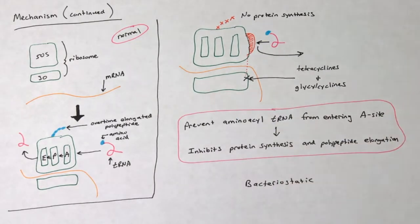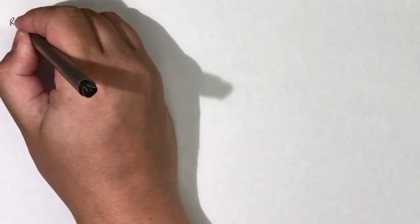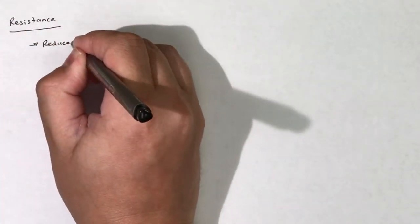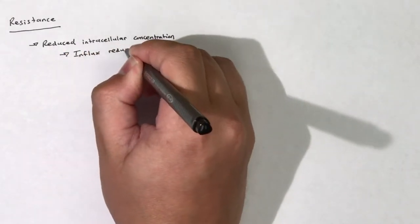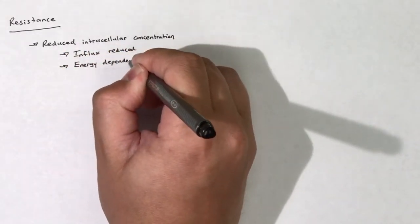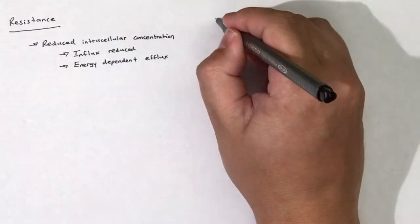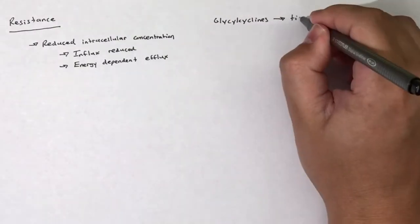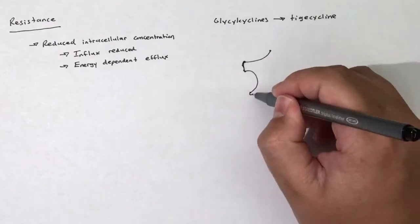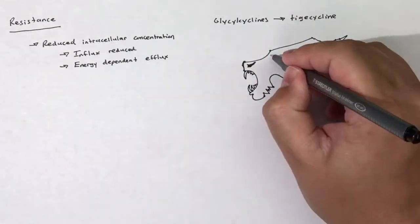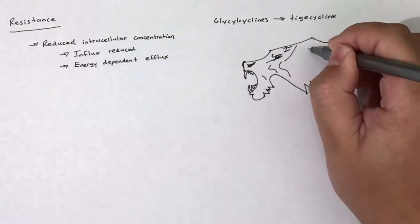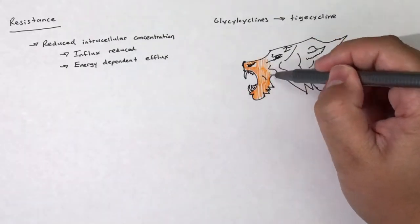Tetracyclines and glycylcyclines are bacteriostatic. Resistance to tetracyclines and glycylcyclines is often inducible and is usually due to one of three possible mechanisms. The first mechanism of resistance deals with reduced intracellular concentration of the antibiotic. This can be mediated by two different pathways. The influx of tetracyclines or glycylcyclines can be reduced or an energy-dependent efflux pathway may develop.